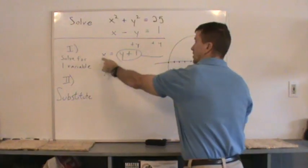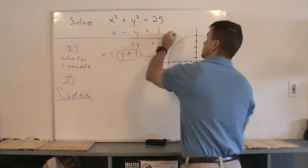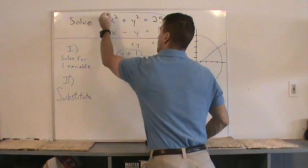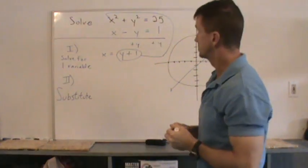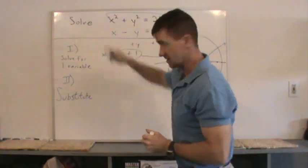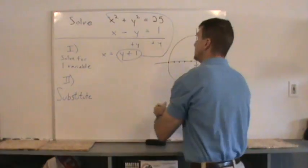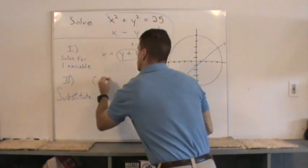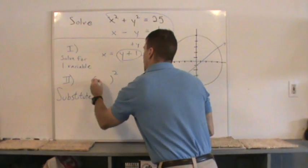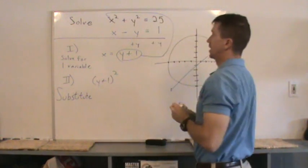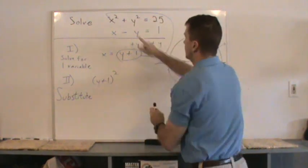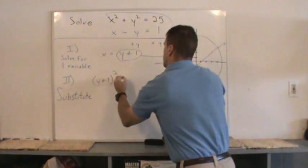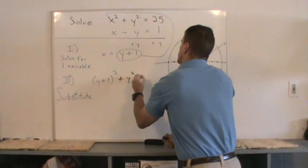For what letter? Well, this is an x. So I'm going to have to substitute this into the other equation where x is located. So I'm going to put this right there. That became y plus 1 squared, rather than just x squared. And then we have the remaining part, the plus y squared equals 25.